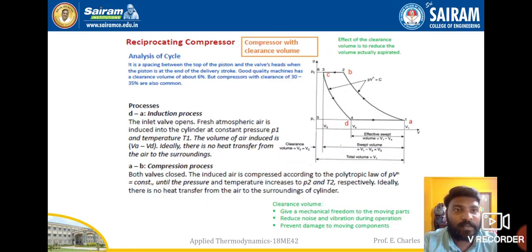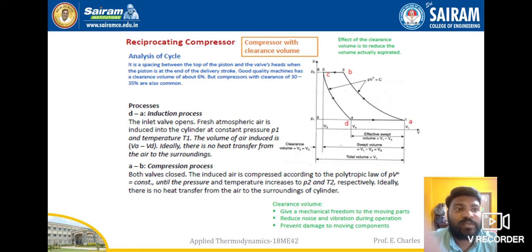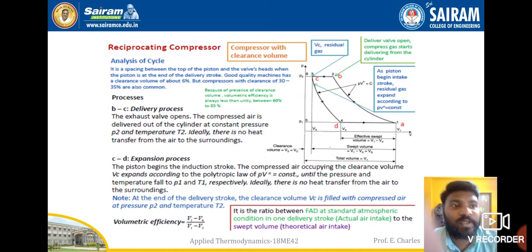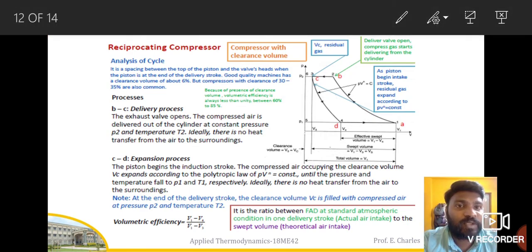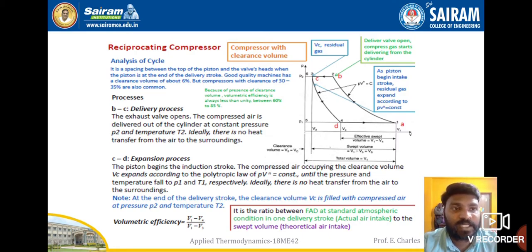Now we move to the compressor with clearance volume. First, we will see how the PV diagram looks with clearance volume. In the previous diagrams without clearance volume, there is a swept volume, a compression stroke, and a delivery stroke, but no clearance volume is shown. In the compressor with clearance volume, the PV diagram shows a clearance volume at the start.